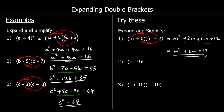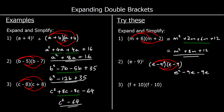For the second one, we've got e minus 9 squared, which means e minus 9 multiplied by e minus 9. So we do e times e, e times negative 9, negative 9 times e, and negative 9 times negative 9. E times e is e squared. E times negative 9 is negative 9e. Negative 9 times e is also negative 9e. And negative 9 times negative 9 is positive 81. Collecting the like terms: negative 9e take away 9e is negative 18e. So we've got e squared minus 18e plus 81.